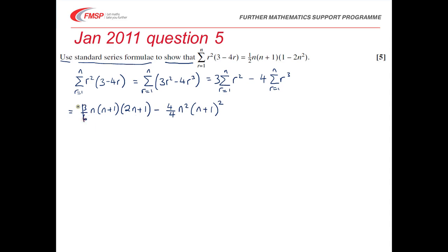3 sixths is a half and 4 quarters is 1. So if you're at all wobbly about factorising, then take out the fraction on its own first. We're going to need that. We can see from the answer. So taking out a factor of a half leaves me with n, n plus 1, 2n plus 1 with the first term and 2 of the second term. That's two halves, which is 1.